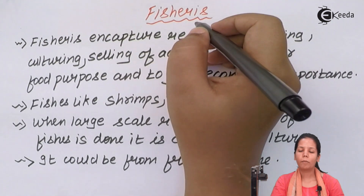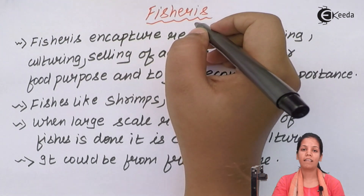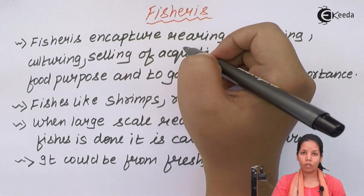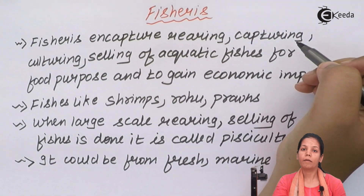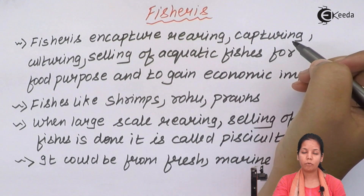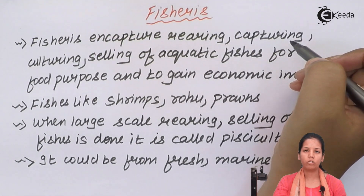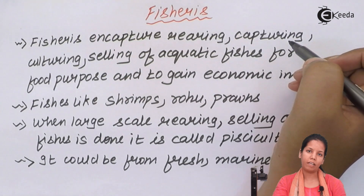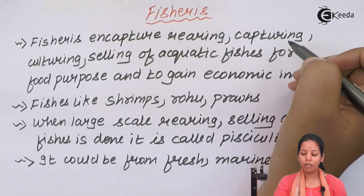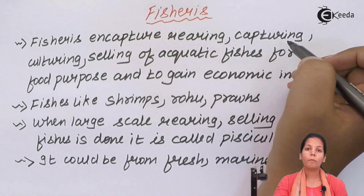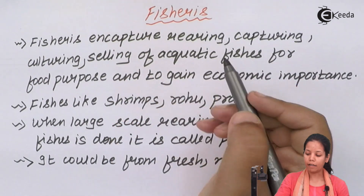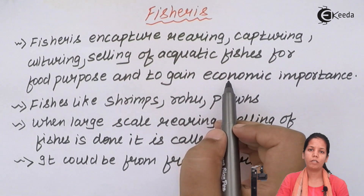If I talk about this concept of fisheries, it is nothing but the capturing, rearing, or selling of fish products — which include shrimps, Rohu, pomfret, crabs, or any one of them — found in freshwater or aquatic water, for gaining monetary benefits and also used as a food source. These are termed as fishery products.